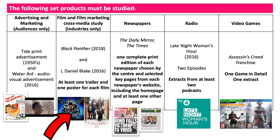For newspapers you're looking at the Daily Mirror and the Times. You need to have studied at least one complete newspaper from the Mirror and the Times. You need to have studied some key pages from their website including the home page and at least one other page, and again you'll probably study a lot more than this. You'll probably look at social media and other things as well related to these two newspapers.